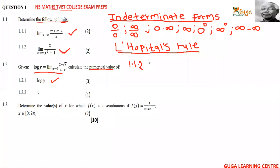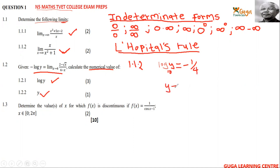We already know that our log y equals negative 1/4. Since the base is 10 (common log), y equals 10 to the power of negative 1/4, which equals approximately 0.562.